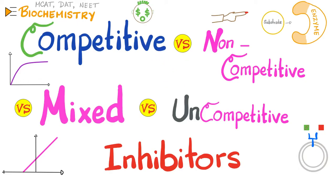Hey guys, it's Medicosis Perfectionelis, where medicine makes perfect sense. Thank you for watching my biochemistry playlist. In previous videos, we talked about enzyme kinetics — Michaelis-Menten and Lineweaver-Burk plots, competitive inhibitors, non-competitive inhibitors, mixed inhibitors, and uncompetitive inhibitors. Today, let's compare among the four types of enzyme inhibitors.